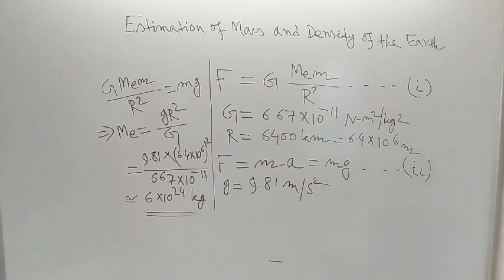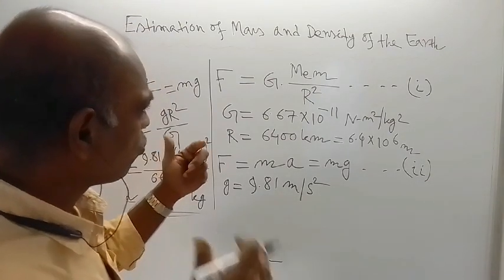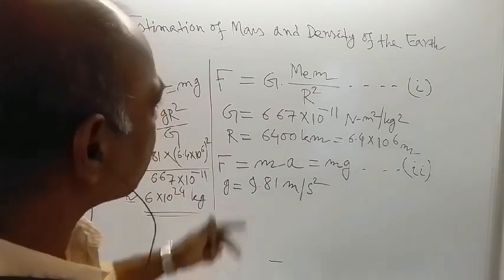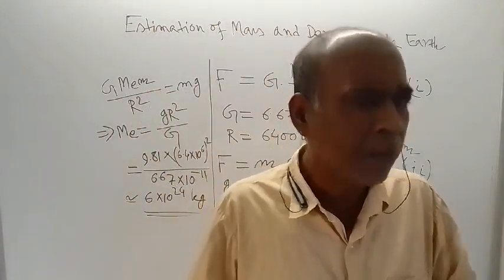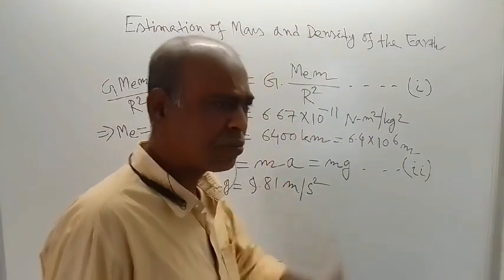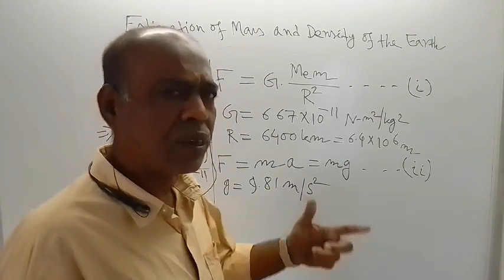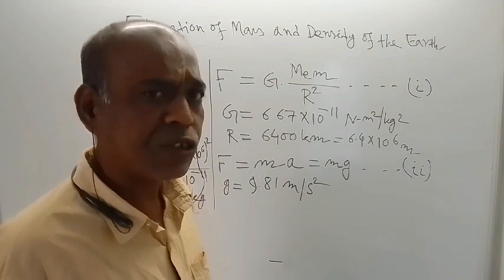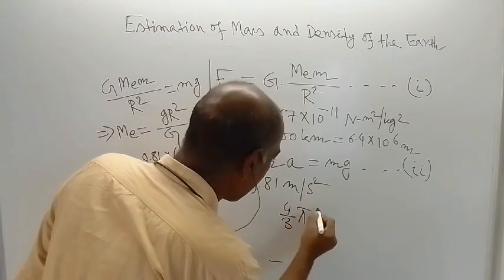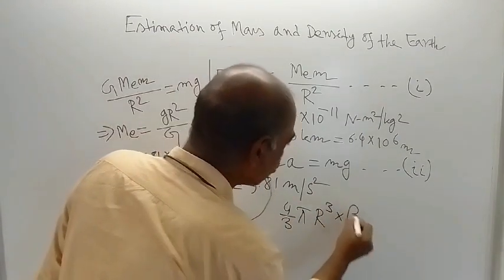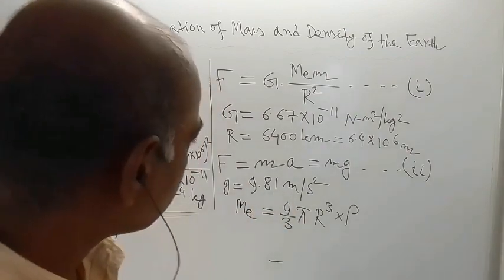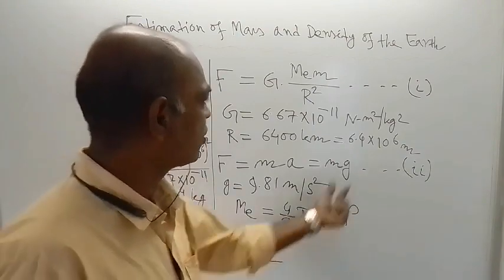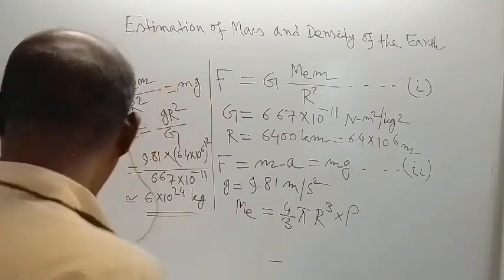Let me check whether the entire board is visible — yes, the entire board is visible. Now we are moving for the estimation of density of the Earth. Density of Earth is denoted by rho. The Earth is assumed to be spherical — though it is not exactly spherical, it is assumed so for simplicity. If Earth is spherical, then the volume of the Earth is four-thirds pi r cube, where r is the radius of the Earth. So: volume times density equals mass of the Earth, which is Mₑ.